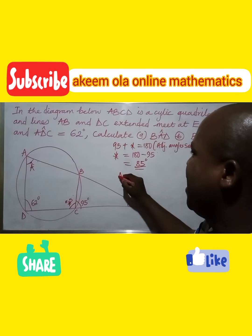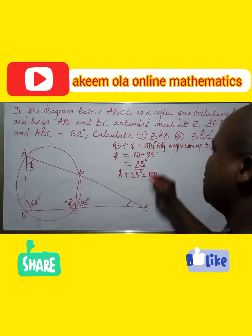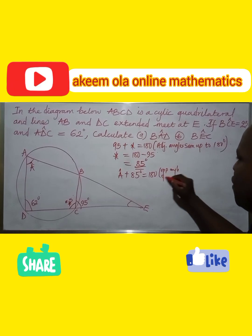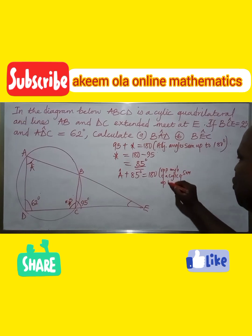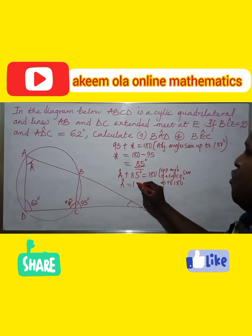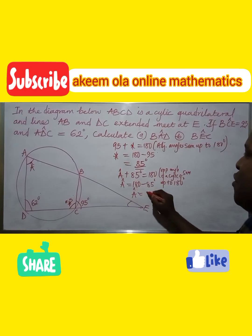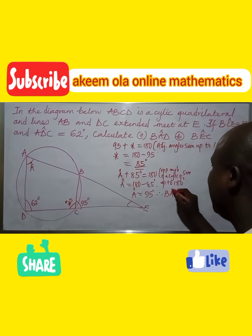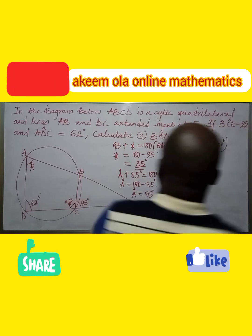Now, using opposite angles of a cyclic quadrilateral: angle A plus 85° equals 180°. That means angle A equals 180° minus 85°, which equals 95°. Therefore, angle BAD is equal to 95°. We are done with the first question.